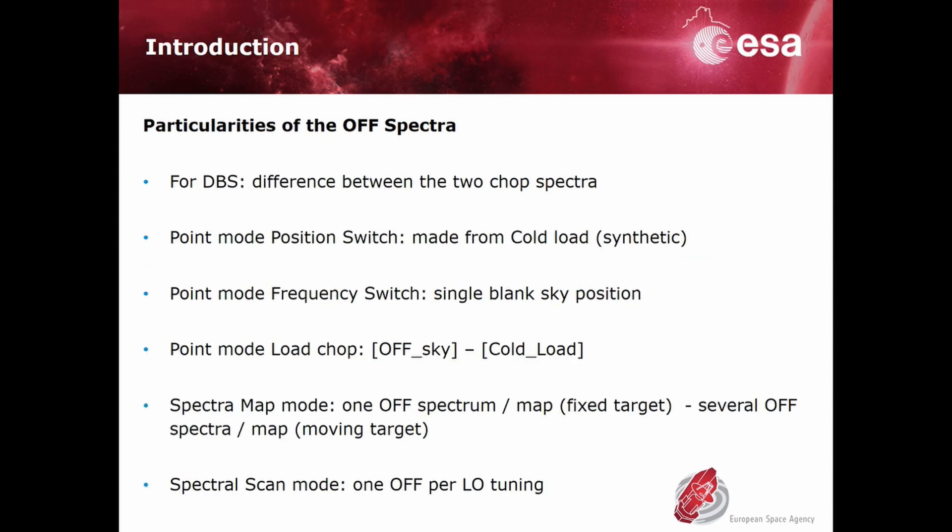For instance, for the DBS, it is the difference between the two CHOP spectra. For point mode position switch, it emulates the blank sky position observed against the internal code load. For point mode frequency switch, it is a single blank sky position observed in frequency switching mode.